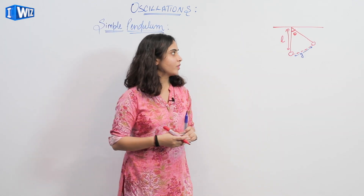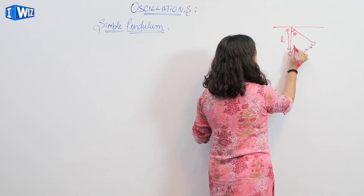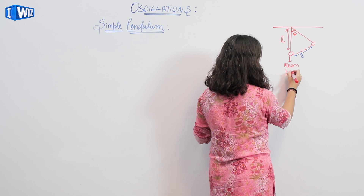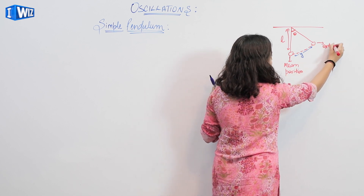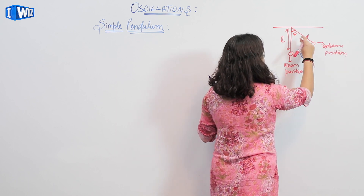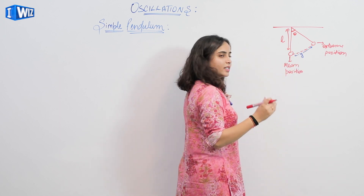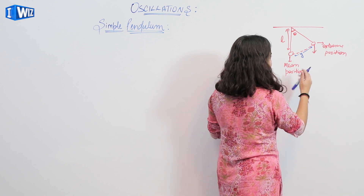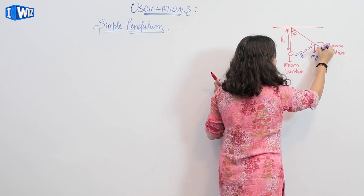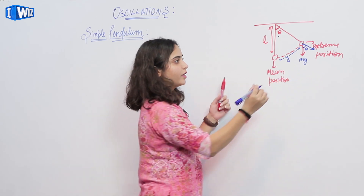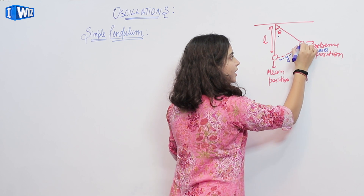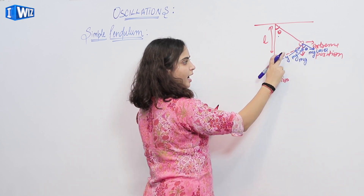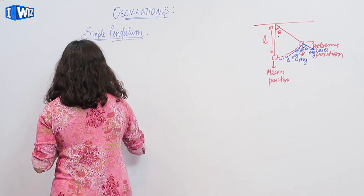Now we will study the simple pendulum. We have considered a pendulum attached and oscillating from its mean position to its extreme position. It makes angle theta, where y is the displacement. Now we will mark the forces acting: one is mg downward. We make the components of mg — this is mg cos theta, and here it will be mg sine theta. So mg sine theta is in the direction of the mean position.